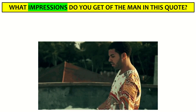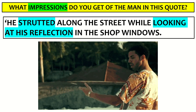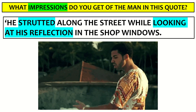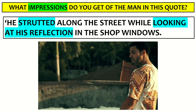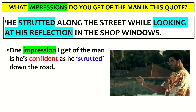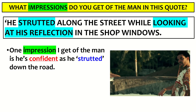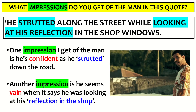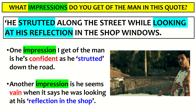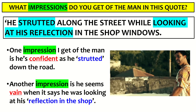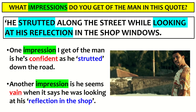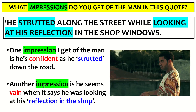Another example: 'He strutted along the street while looking at his reflection in the shop window.' If it said 'he walked' it wouldn't tell us much, but 'strutted' — what kind of person would you associate with that? 'One impression I get of the man is he's confident, as it says he strutted down the road.' And looking at his own reflection: 'Another impression is he seems vain, as he was looking at his reflection in the shop window.' Each answer has the word impression, the opinion in red, and the quote in blue.